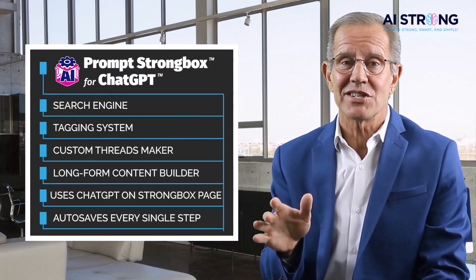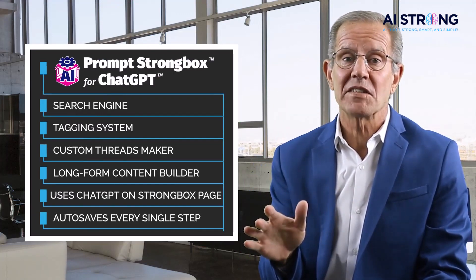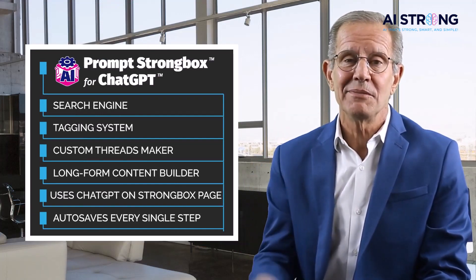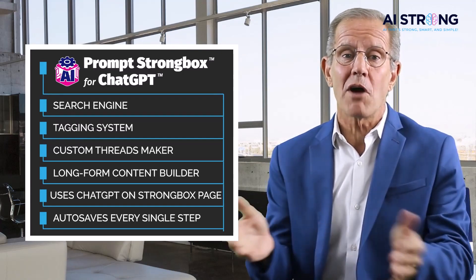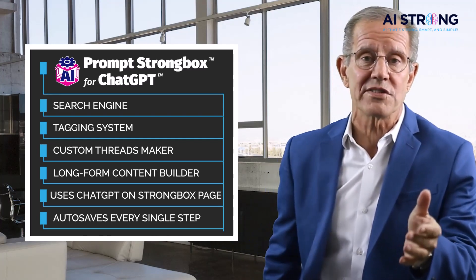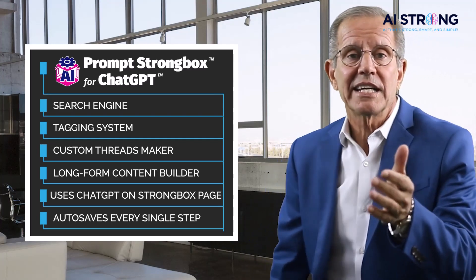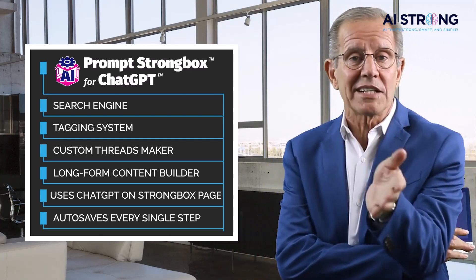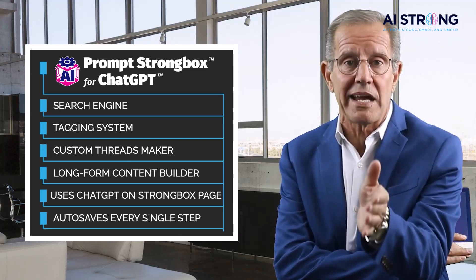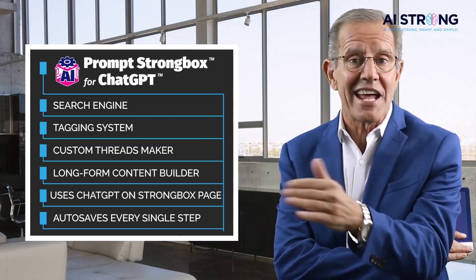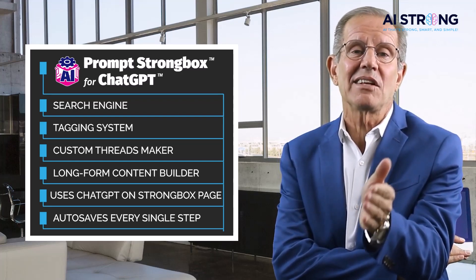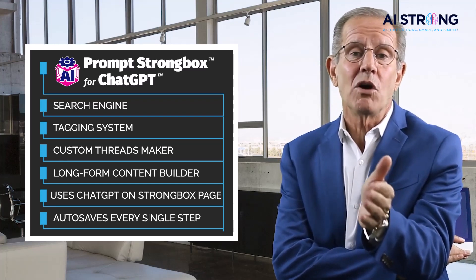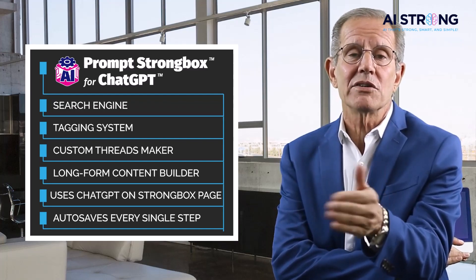The Prompt Strong Box for ChatGPT. The Prompt Strong Box is like a backup for all your conversations, but it's a whole lot more than that. It's got a search engine, a tagging system, a custom threads maker, and even a long-form content builder for digital products like eBooks and courses. You can even use ChatGPT directly on the Prompt Strong Box page and it'll auto-save every single step of your conversation with AI. I know that's a lot to take in, but don't worry — I'll break it down for you here in just a sec.